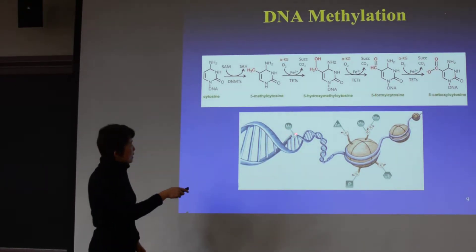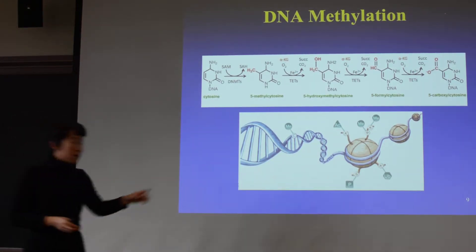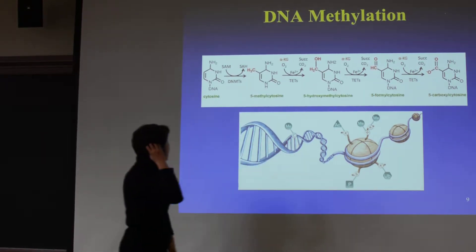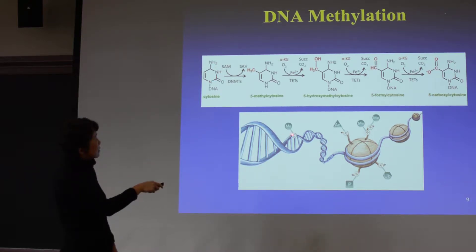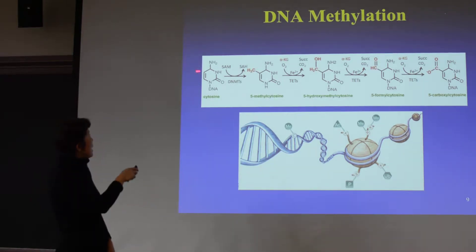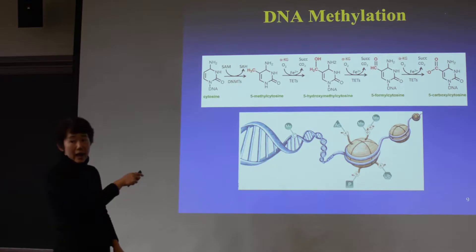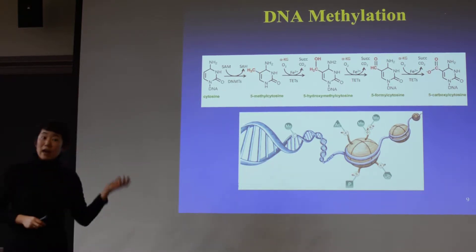DNA methylation, depending on the organism — like in animals — it's mostly on C's, just on the nucleotide C, and there is a reaction that happens. You can see here is the regular cytosine on the ACGT sequence. On the C, if this region is changed — originally this region is H-hydrogen — there's an enzyme called DNMT. It's an enzyme that will add a methyl group, replacing the original H with a methyl group. Then you get a methylated C.